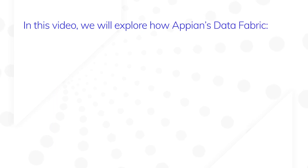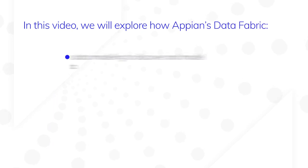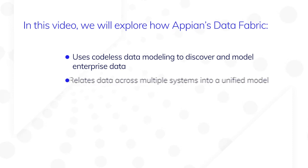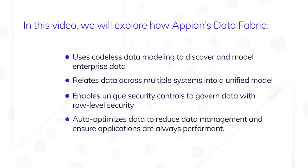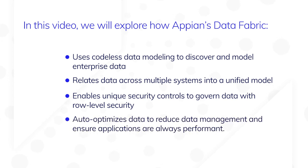In this video, we're going to see how Appian's data fabric first uses codeless data modeling to discover and model enterprise data. It also relates data across multiple systems into a unified model, enables unique security controls to govern data with row-level security, and auto-optimizes data to reduce data management and ensure applications are always performant.